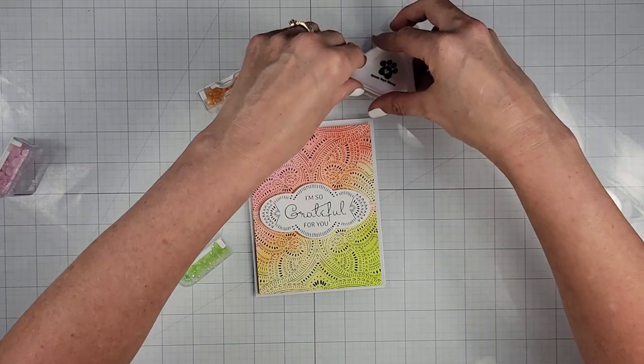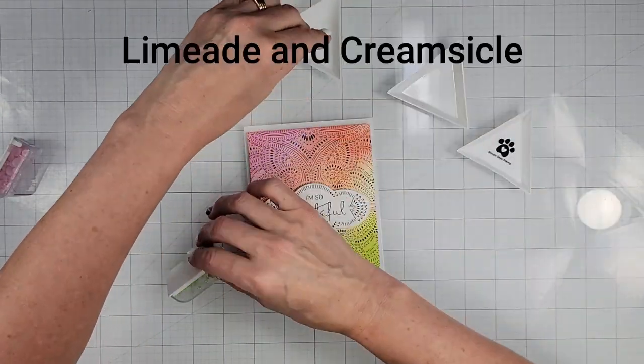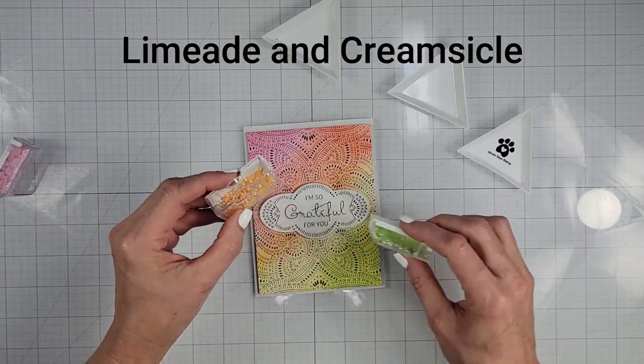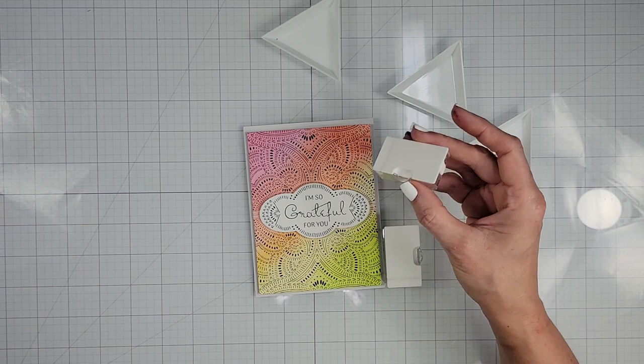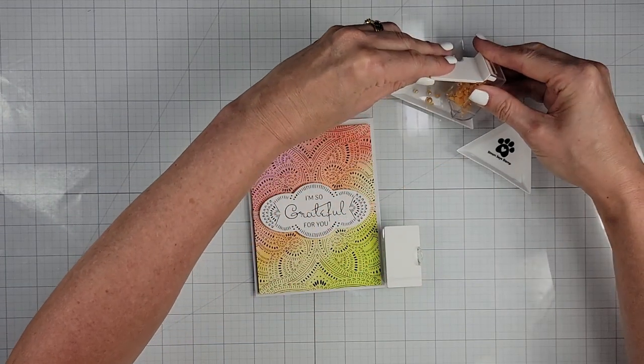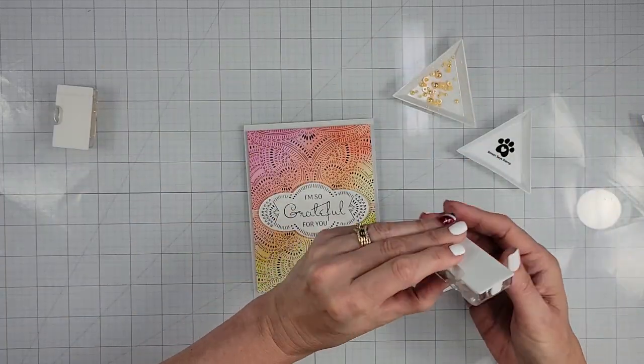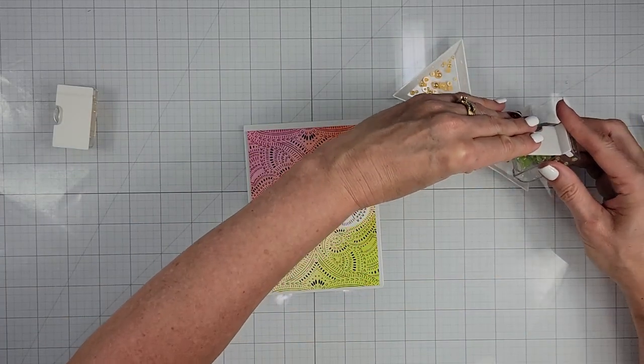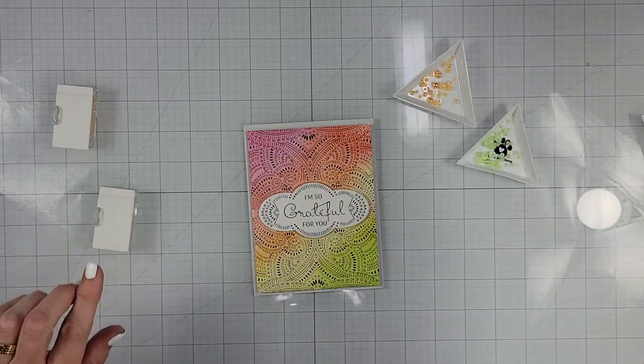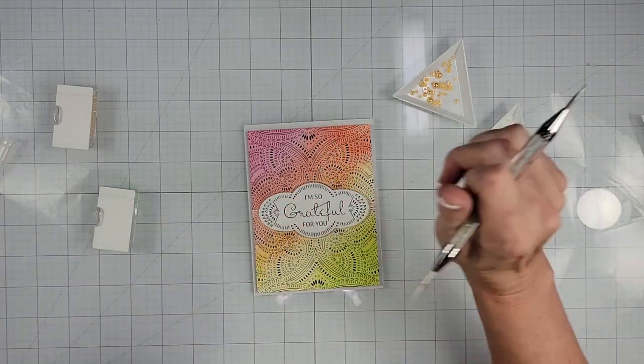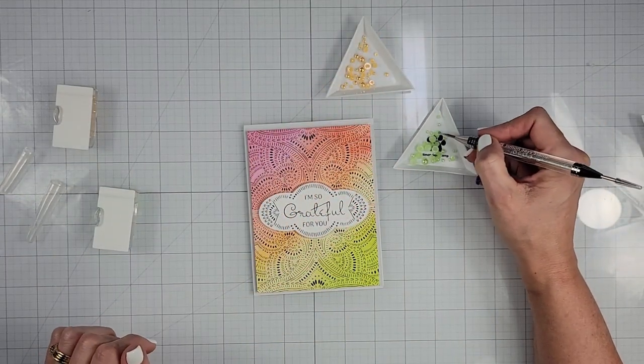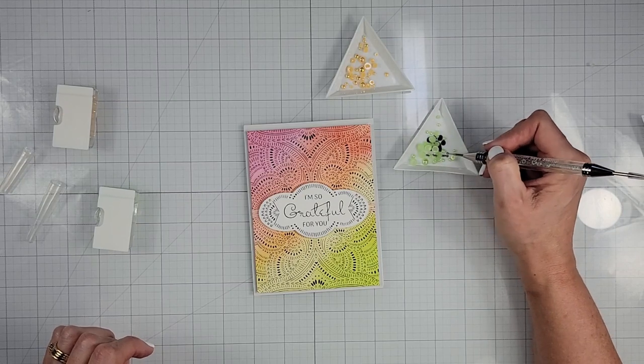I think I'm going to do, I think this is the key lime color from Pretty Pink Posh. And I can't remember what this one is, but it's from Pretty Pink Posh as well. So I'm going to put some of these in each of my little triangle trays. And I'm going to place those around my card. And I'm just going to use a little pickup tool to do this. And I'll be right back and show you what the card looks like.